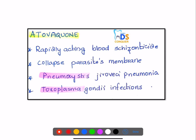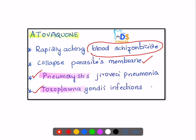Atovaquone is a rapidly acting blood schizonticidal drug that causes collapse of the parasite's mitochondrial membrane potential. Beyond malaria, it can also be used in Pneumocystis pneumonia and toxoplasma infections.